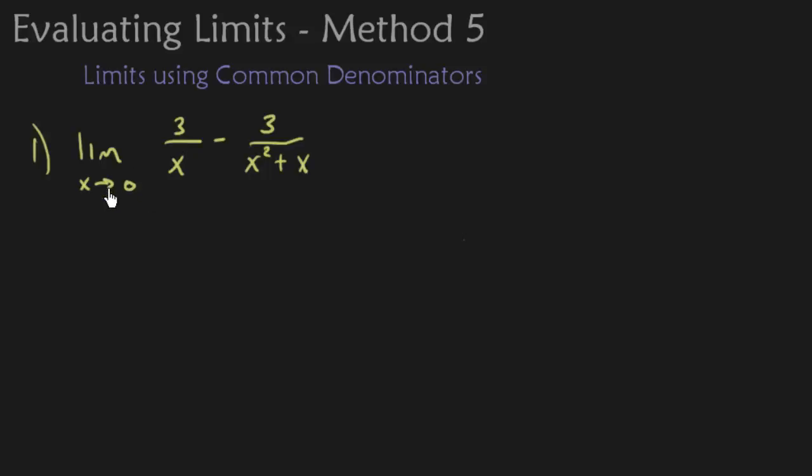In this example we have the limit as x approaches 0 of 3 over x minus 3 over x squared plus x. Now let's try Method 1 where we just plug in x equals 0 and see what we get. So we plug in 0, we're going to get 3 over 0 minus 3 over, well, 0 again.